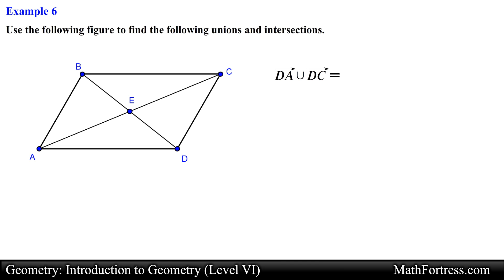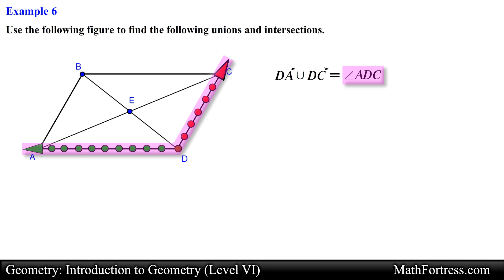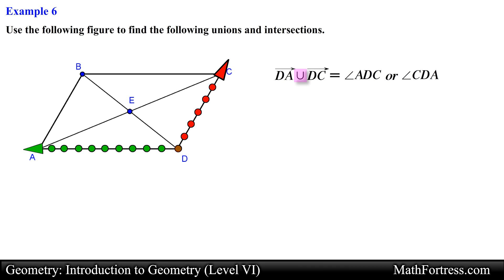Here we need to find the union of ray DA and ray DC. The set of all points represented by ray DA and those of ray DC are shown in the figure. Since we are looking for the union of these two rays, we essentially form angle ADC or angle CDA with the vertex located at point D. When finding the union of two sets we merge all the elements together — in this case all the points located on ray DA, ray DC, or in both.